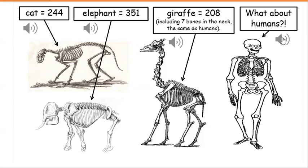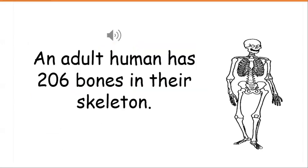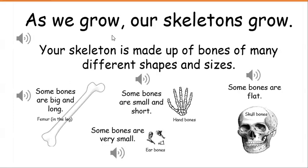A giraffe has seven bones in the neck — the same as humans. What about humans? An adult human has 206 bones in their skeleton. As we grow, our skeletons grow too. Your skeleton is made up of bones of many different shapes and sizes.